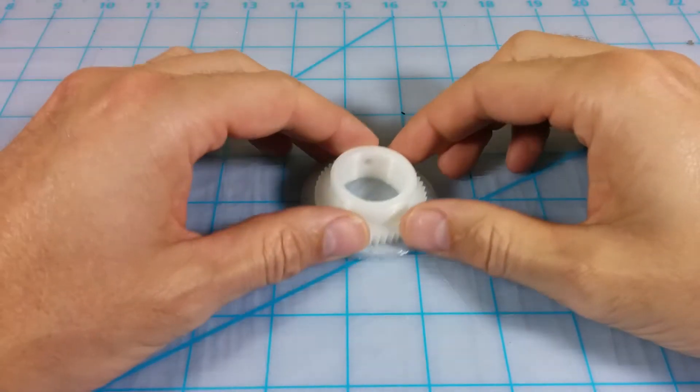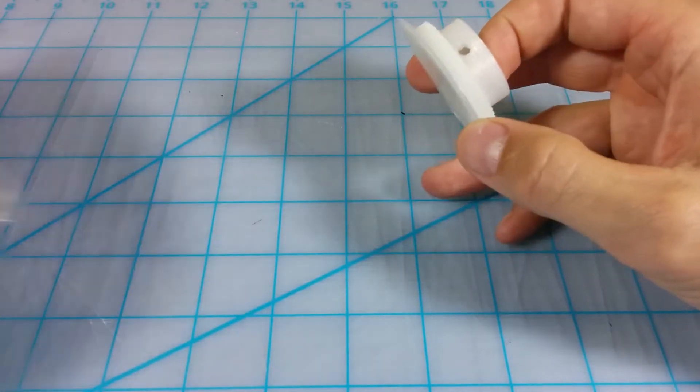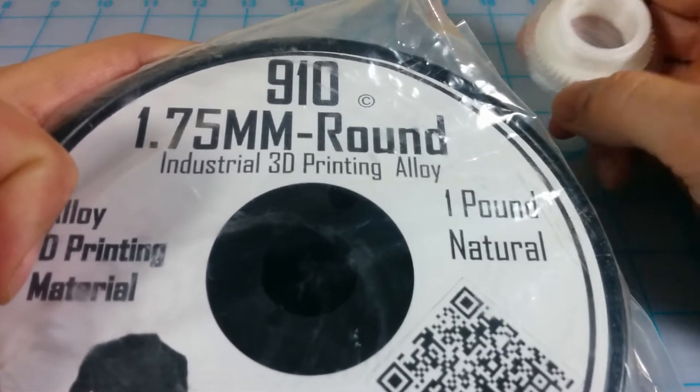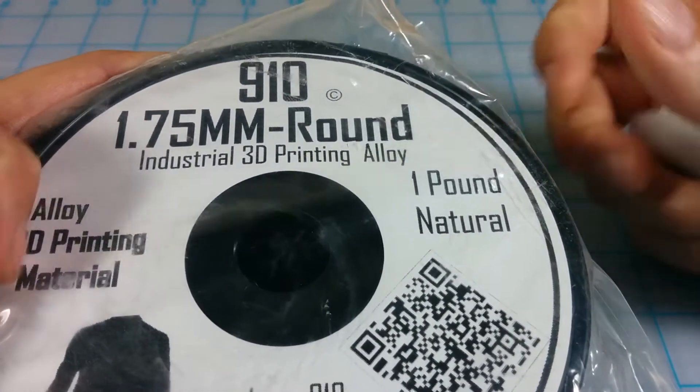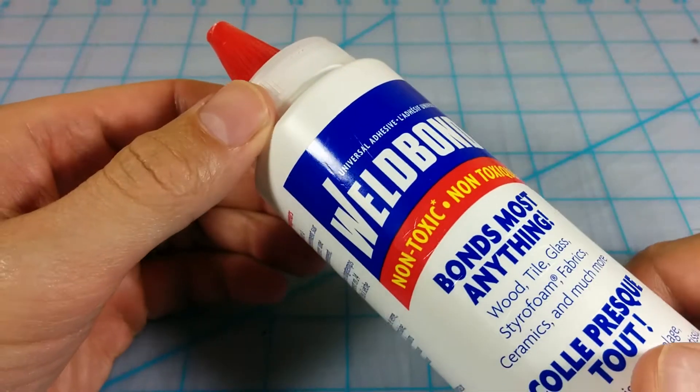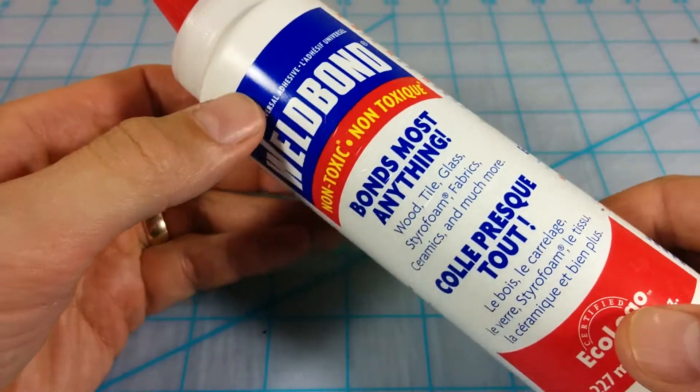I thought I'd just share this. I've been printing with the 910 nylon alloy and experimenting with it using weld bond, I think it's just PVA glue,